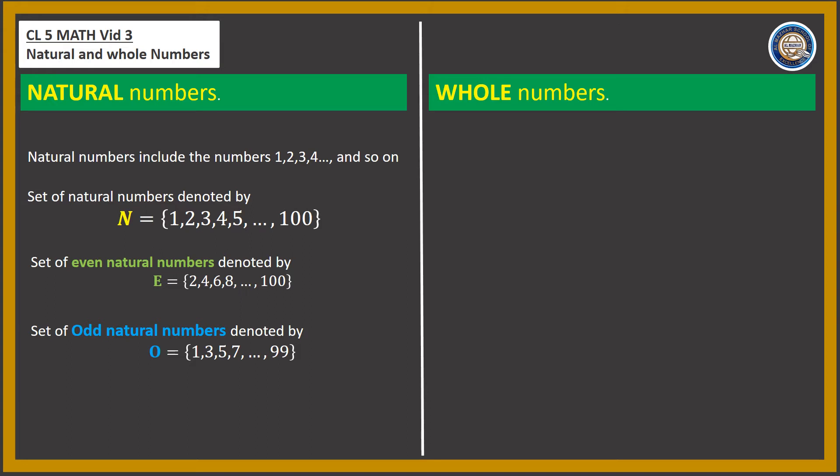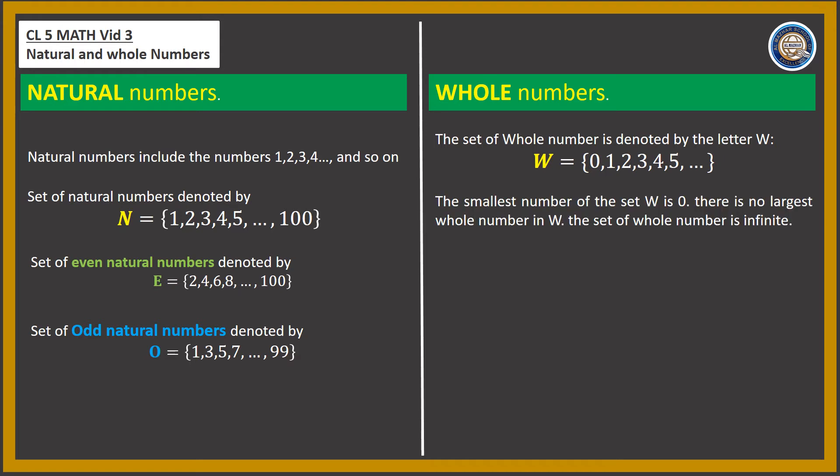Next are whole numbers. What are whole numbers? They are just like natural numbers, but with one difference: zero is included. We show whole numbers with W in a set, and it starts from zero: W = {0, 1, 2, 3, 4, 5, ...}. Natural numbers start from one, while whole numbers start from zero. The smallest whole number is zero.